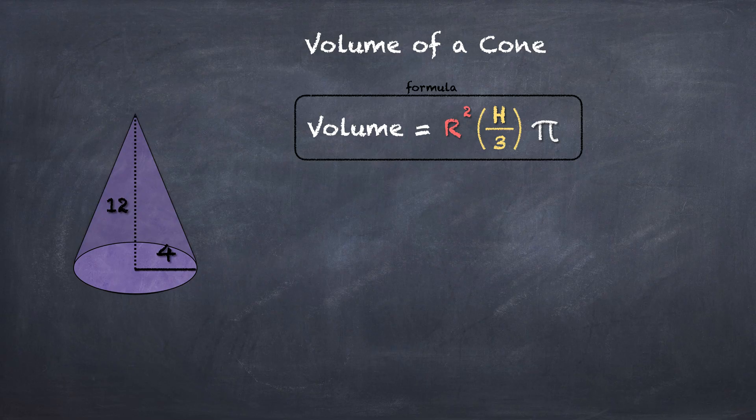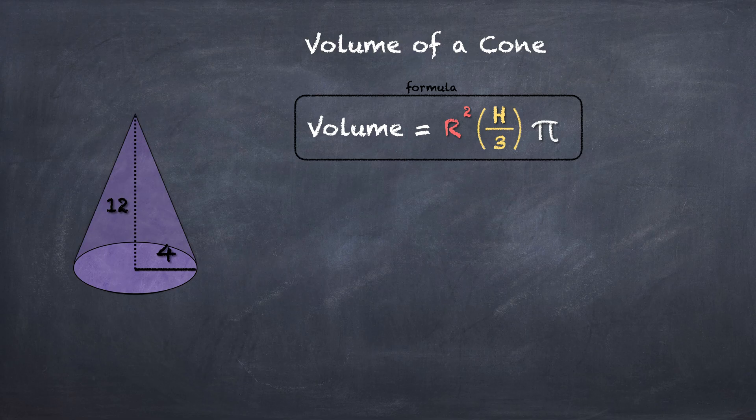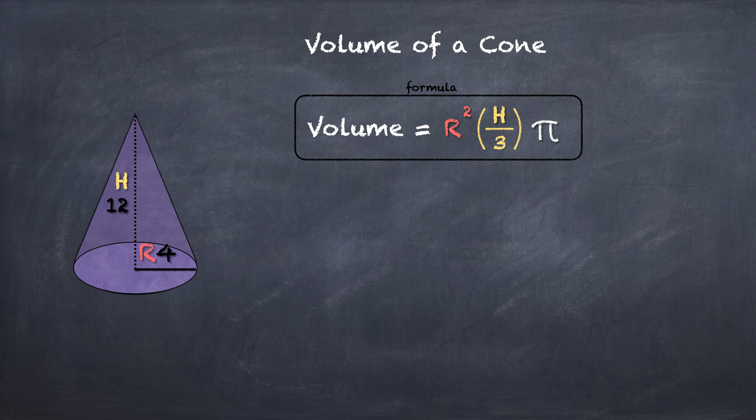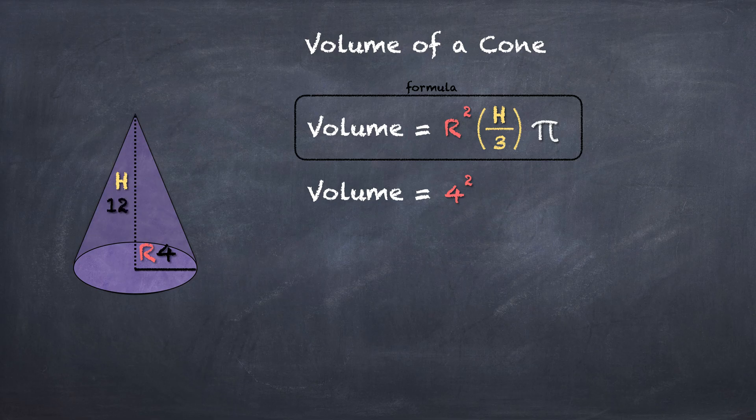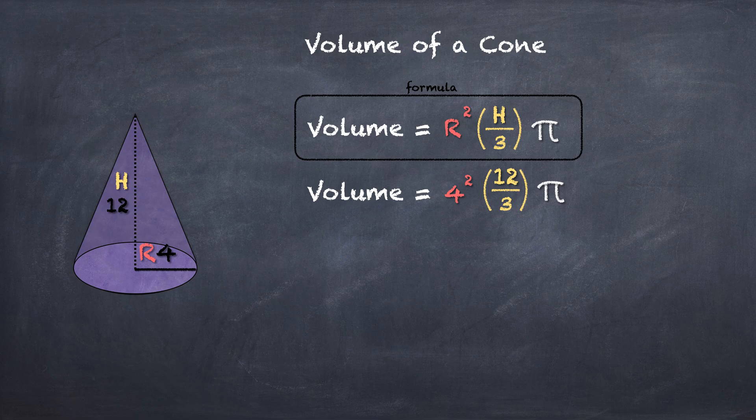Let's take a look at how to do this with some actual numbers. Let's say we got 12 there and 4. Now let's just label. I always do R first. So 4 is going to be R, 12 is going to be H. Now let's just plug in: 4² times 12 divided by 3 times π. Now you can just solve.